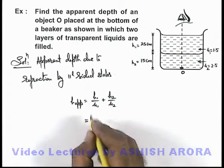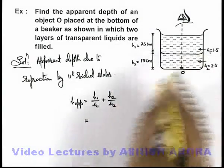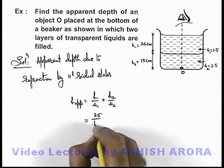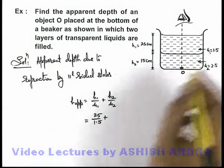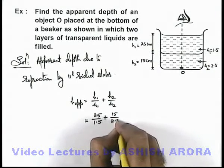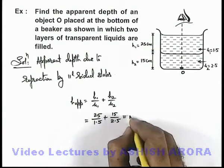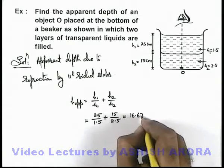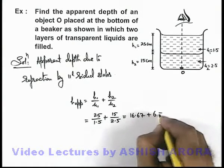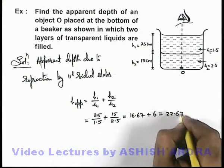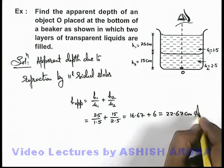So here this can be directly given as h1/μ1 = 25/1.5, plus h2/μ2 = 15/2.5. On simplifying, we get 16.67 + 6, that'll be 22.67 centimeters. That'll be the answer to this problem.